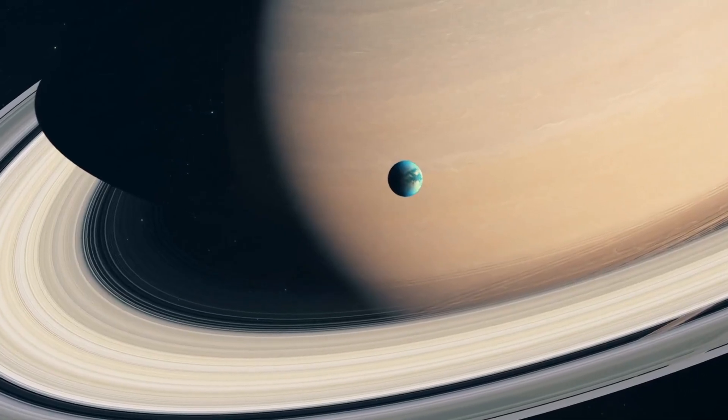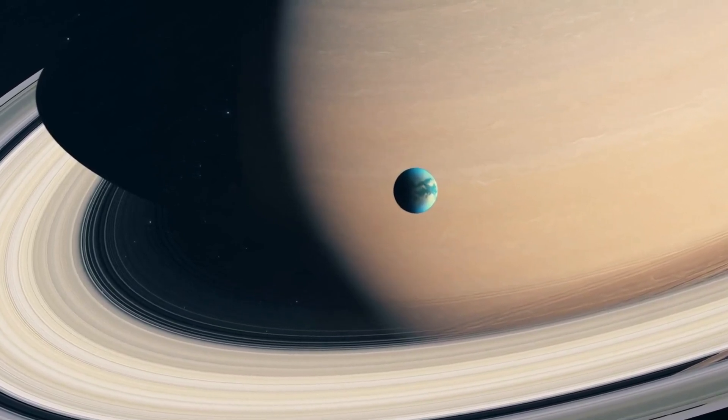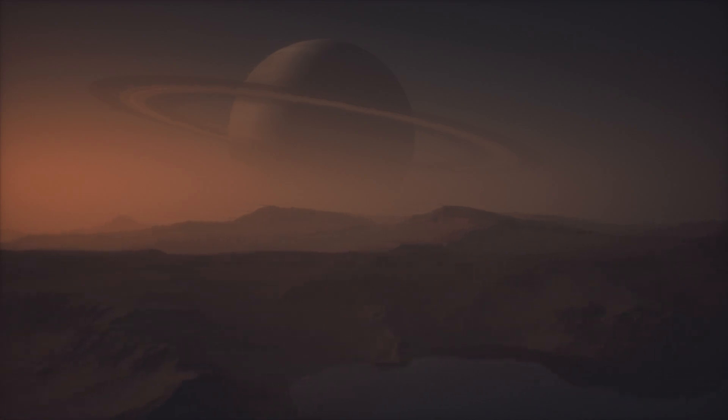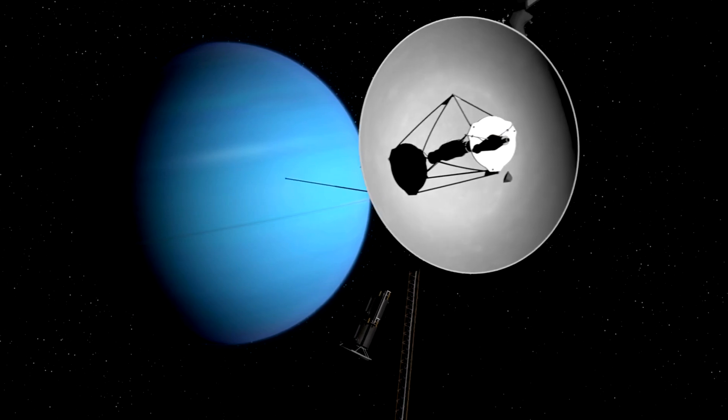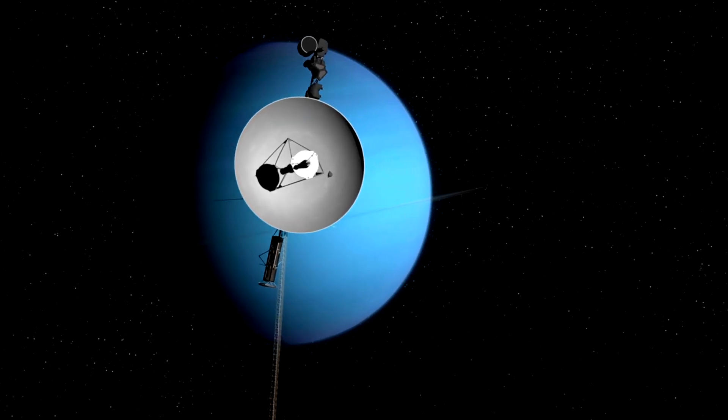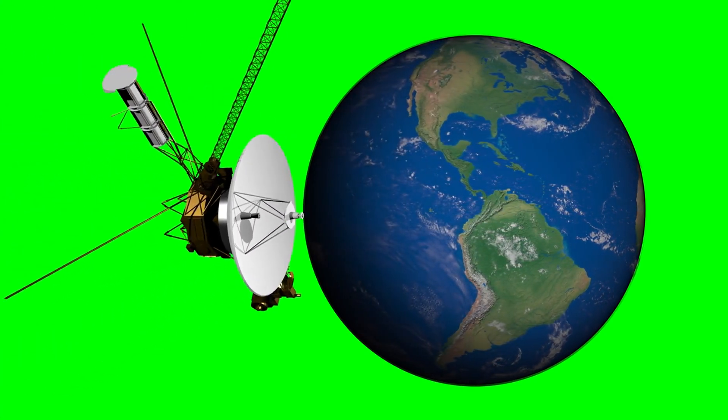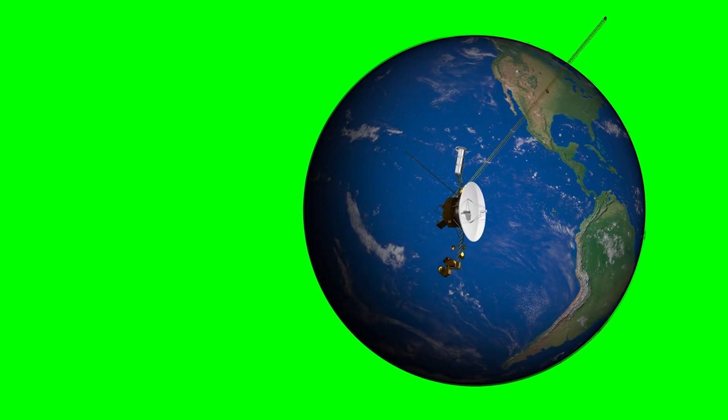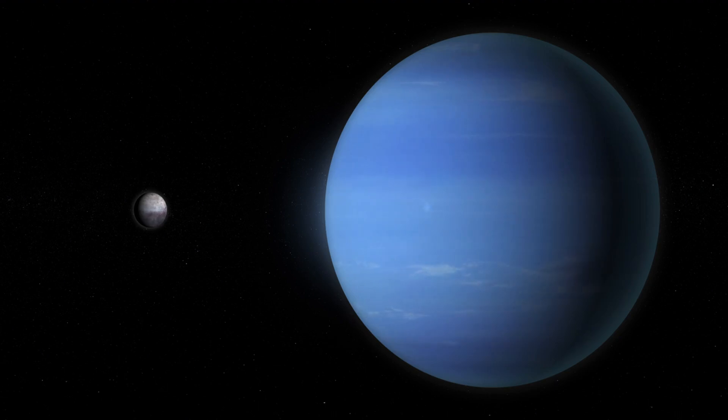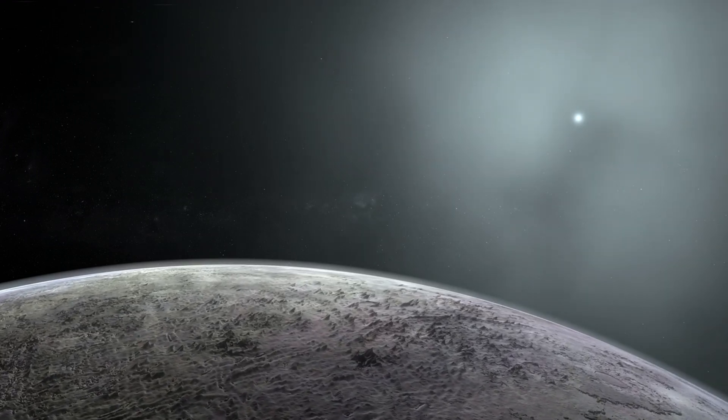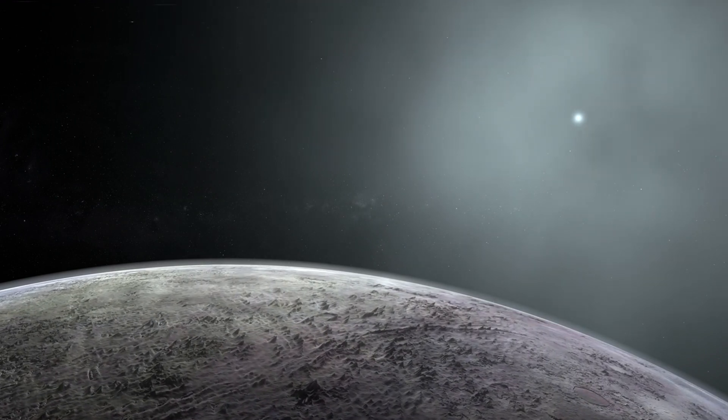The encounter between Voyager 1 and Titan, Saturn's biggest moon, was among the most amazing. Titan's dense, hazy atmosphere hinted at the potential for complex chemical processes similar to those that might have existed on early Earth, yet its surface remained hidden. The twin probes of Voyager were a testament to the continuing spirit of exploration and human inquiry as they sailed out of the solar system. Their golden records, which contained a variety of musical selections, greetings in different languages, and sounds of Earth, were intended to serve as time capsules for any extraterrestrial civilizations they might come across. Voyager 2's flyby of Triton revealed active geysers erupting on its surface, marking the first time such activity had been seen on an icy moon. This incredible discovery led to the speculation that there might be subsurface oceans beneath the icy crust, potentially harboring life.